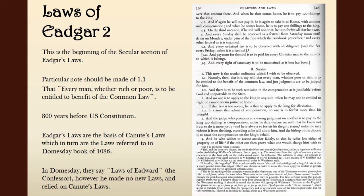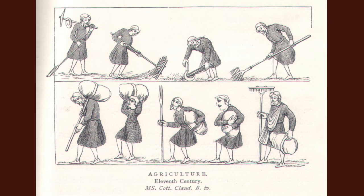An earl or thane would often take the slave to a crossroads and bid them go whichever way they chose. In a more solemn form, the slave would be taken to the hundred meeting or Witenagemot, and the earl or thane would give him a lance or sword of a free man. Law was supposedly prohibiting the slave trade from English ports, but this was ineffective.